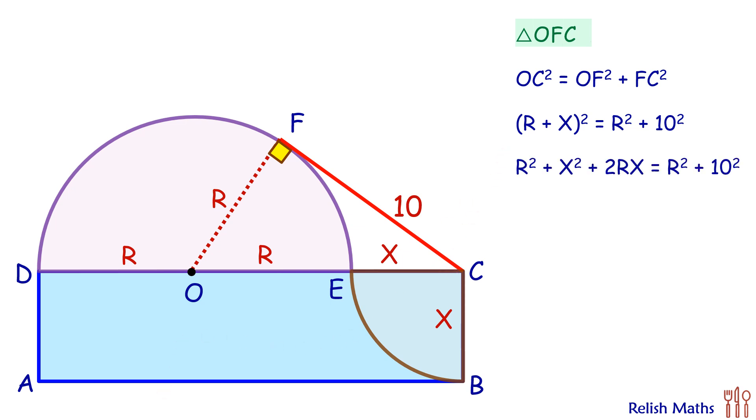Opening up the brackets, so we'll get R squared plus X squared plus 2RX, that's equal to R squared plus 10 squared. Both sides the R squared will get cancelled down, so simplifying this we'll get X common from both the terms.